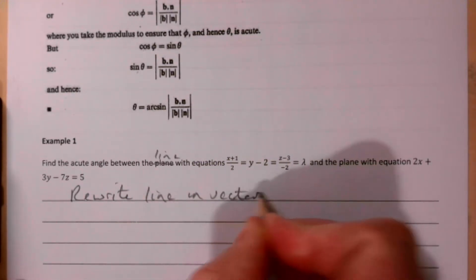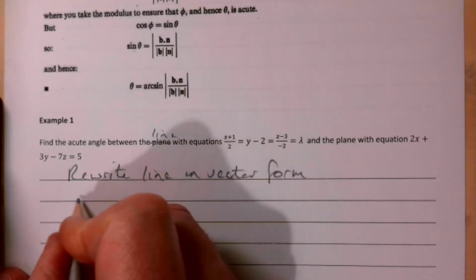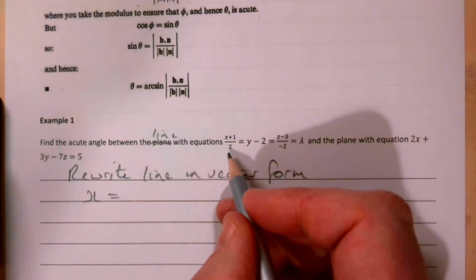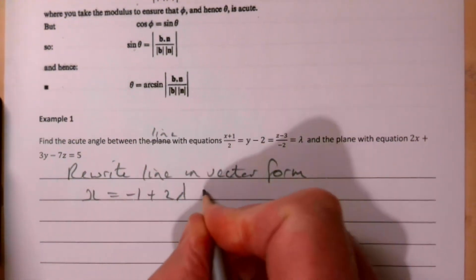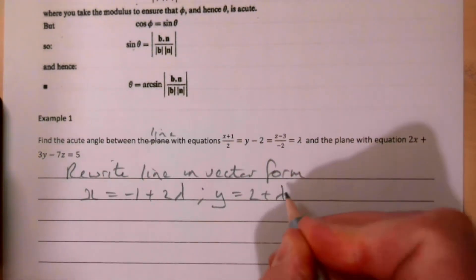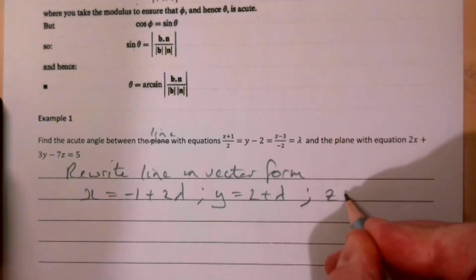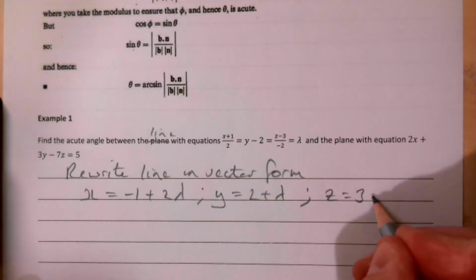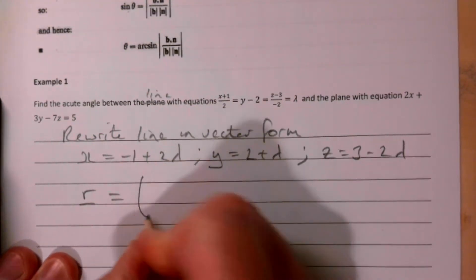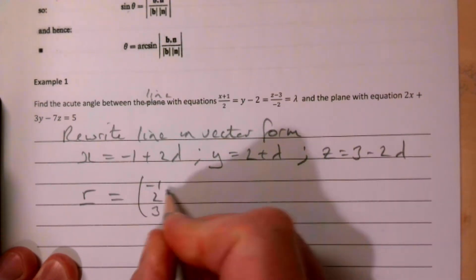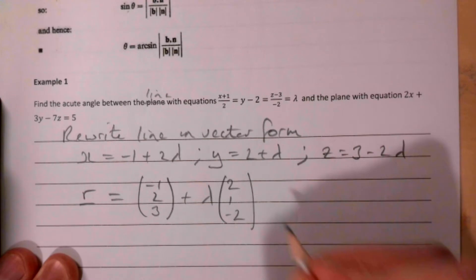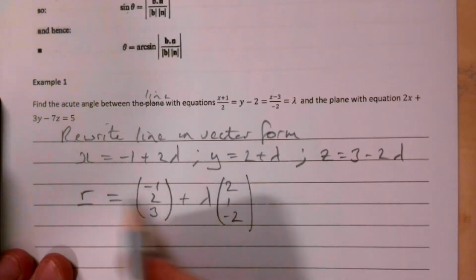Rewriting the line in vector form: let the parameter equal lambda, so x = −1 + 2λ, y = 2 + λ, and z = 3 − 2λ. We can then write the vector equation as (−1, 2, 3) + λ(2, 1, −2). That's the form we want our line in.